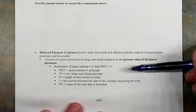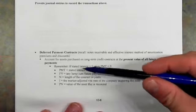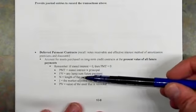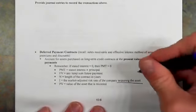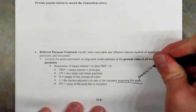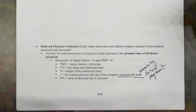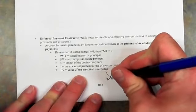We're going to have to establish the present value. Because even though we're paying cash at a later date, the present value of the cash that we are paying at the later date is the acquisition cost of the asset. We have the same five inputs to the present value calculation: the payment, the future value, the number of periods, the market adjusted rate of interest for the company that is acquiring the asset, because they are the one promising future payment. The present value is what we are going to record the asset at, because this is the historical acquisition price.